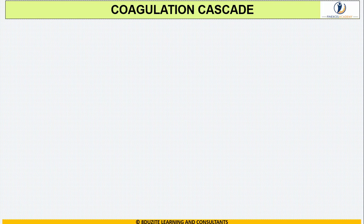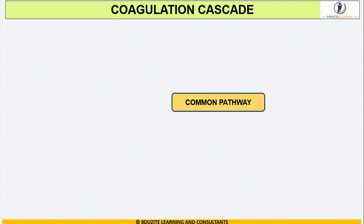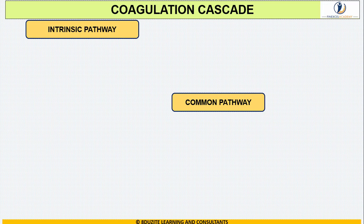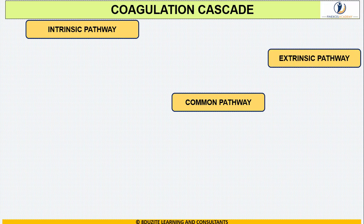Before moving to the drugs, let us check out the coagulation cascade first. In the coagulation cascade, there are three pathways: in the center we have the common pathway, on the left we have the intrinsic pathway, and on the right we have the extrinsic pathway.